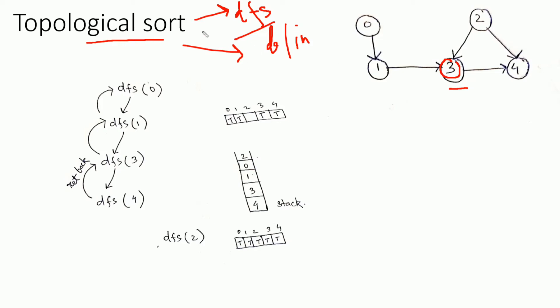Topological sort is observed in the context of a directed acyclic graph, which means a directed graph having no cycles. In this type of graph, vertices are considered as jobs — they can be dependent or independent.